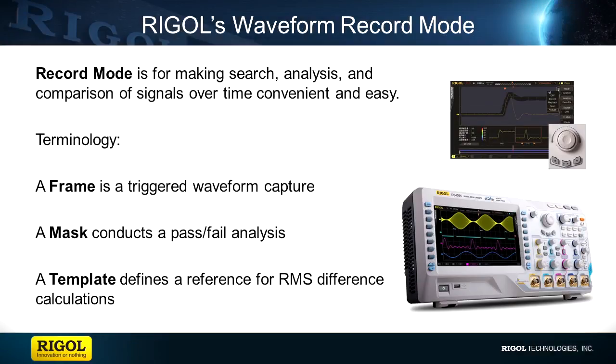Today we're going to talk about Rigol's record mode. Record mode is a capability to search, analyze, and compare signals and waveforms over time, and it's available on any of Rigol's UltraVision oscilloscopes.